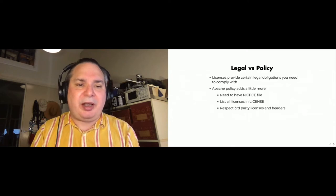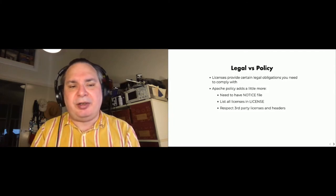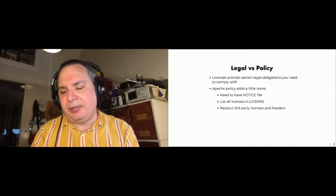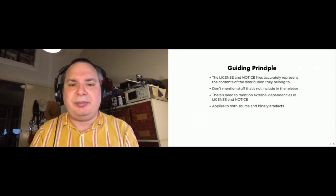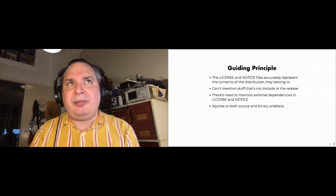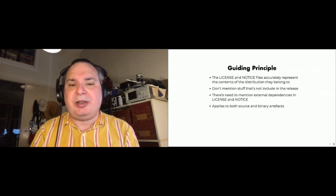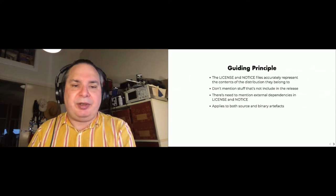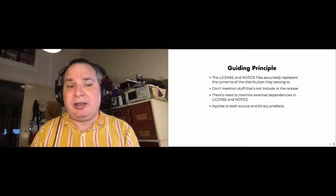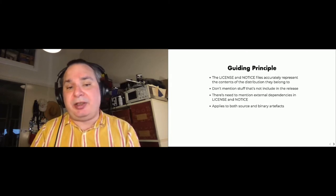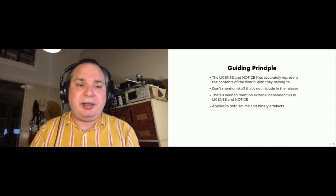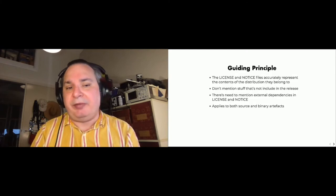At Apache we have a bit more respect for third-party licenses and headers, and we'll definitely make sure that headers stay attached to files and are not changed without the owner's permission. When assembling the license and notice file, the guiding principle is that what's referenced in those files is what's actually in the distribution — not dependencies that are not included. You only need to mention stuff that's actually included in the release. This applies to both source and binary artifacts, and it implies that the license and notice file for source and binaries may differ.